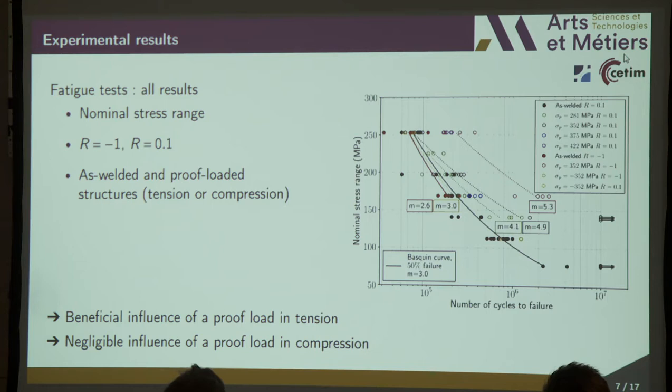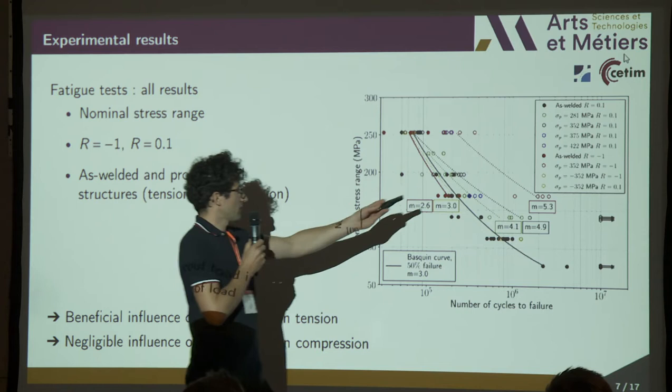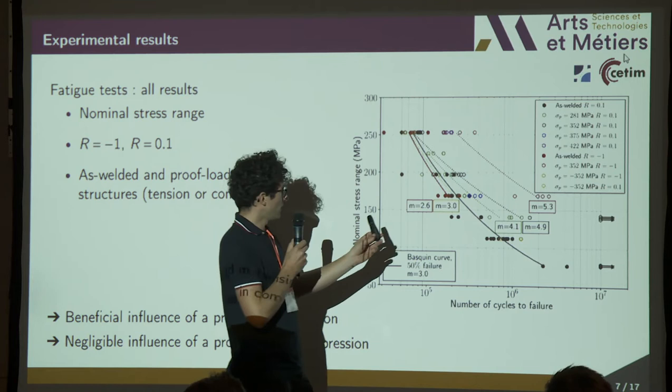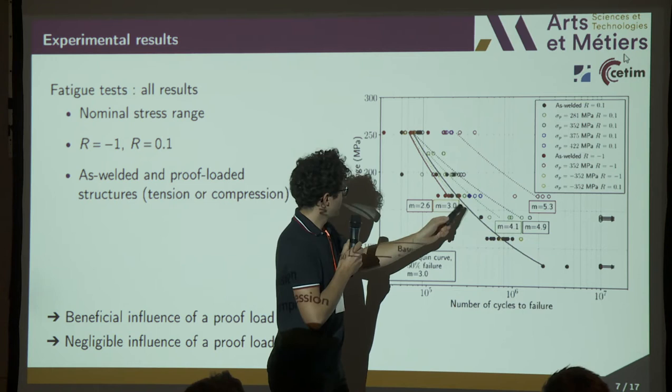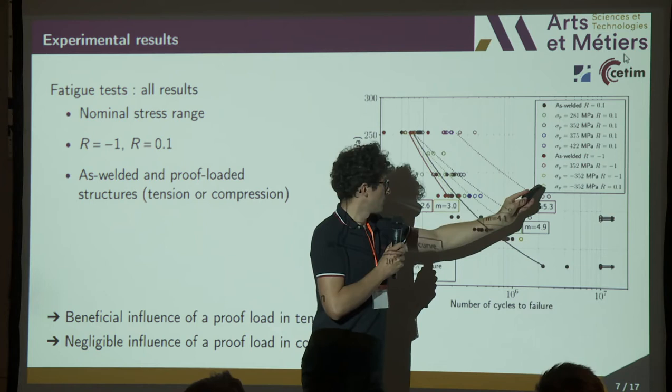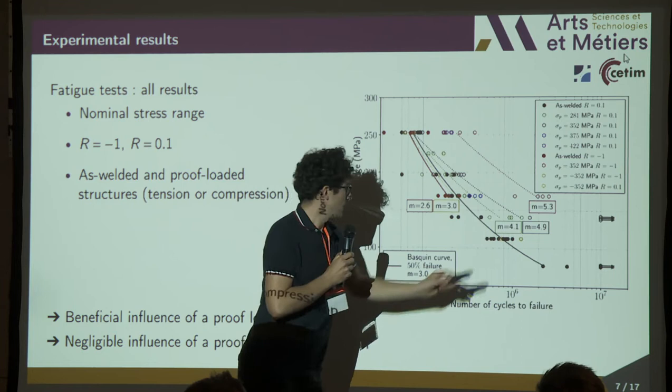On this graph, I present all results obtained in this study. In grey, black, blue, and purple are all results dealing with stress ratio R = 0.1. For each proof-loaded case, we can see a beneficial influence on fatigue resistance. What is very interesting to note is that when you apply a compressive proof load — the orange and yellow points — there is no effect of a compressive proof load on fatigue resistance.